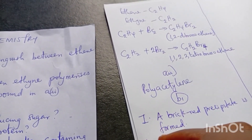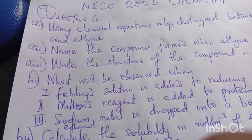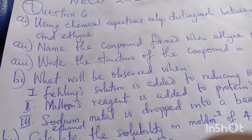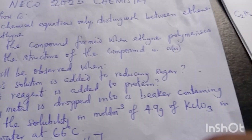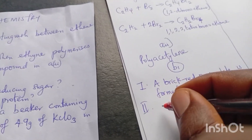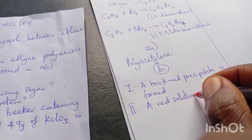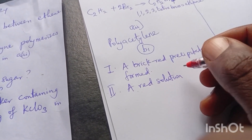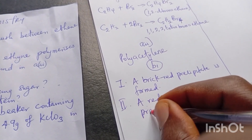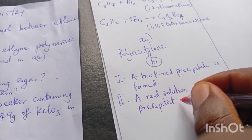For number two: Millon's reagent is added to protein. When you add Millon's reagent to protein, you experience a red solution — or if you like, call it a red precipitate. A red precipitate is formed.